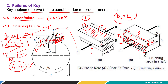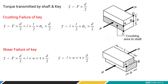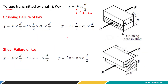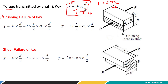The torque transmitted by the shaft-key assembly is simply force times distance. The distance is d/2 (half the shaft diameter) and the tangential force F acts on it, so T = F × d/2. The torque can also be found from the power equation 2πNT/60, or it may be given directly in the problem.